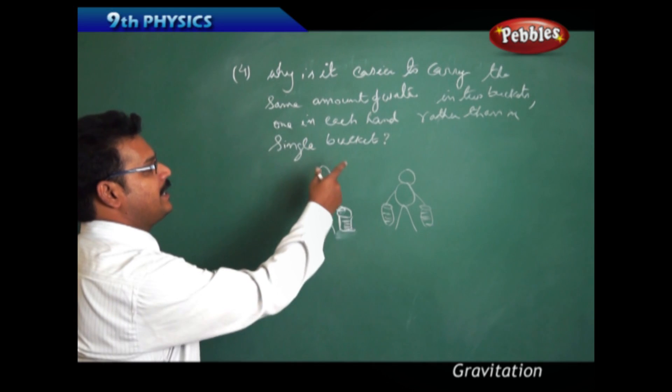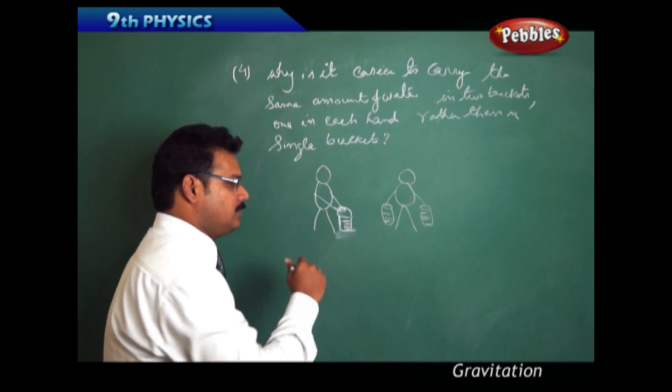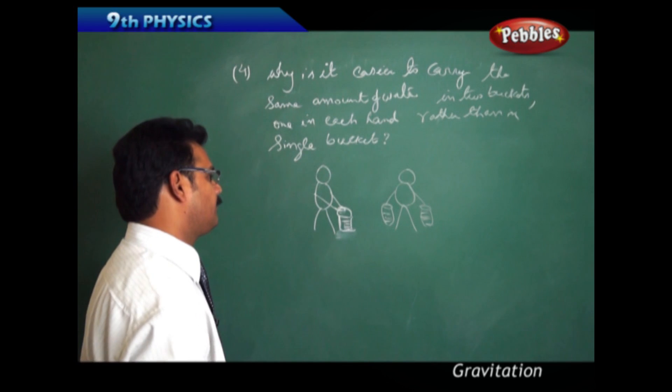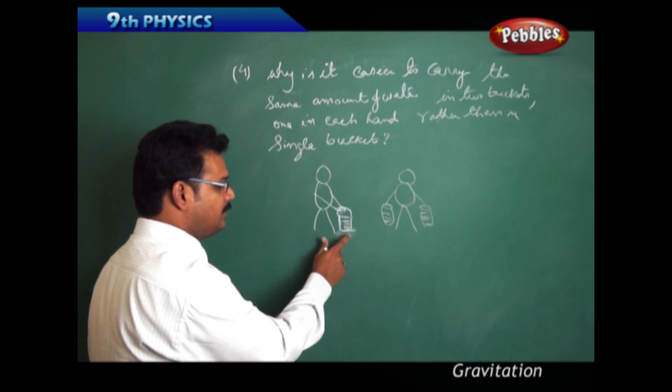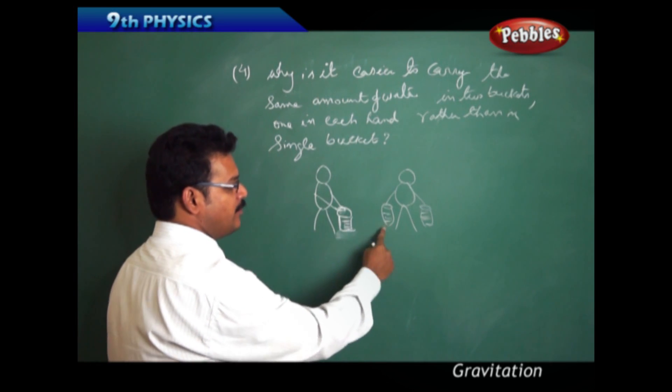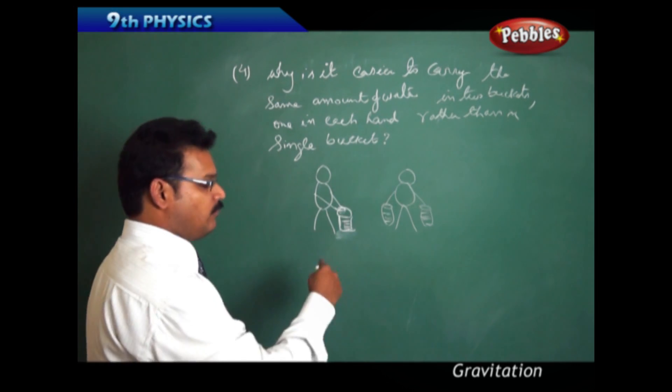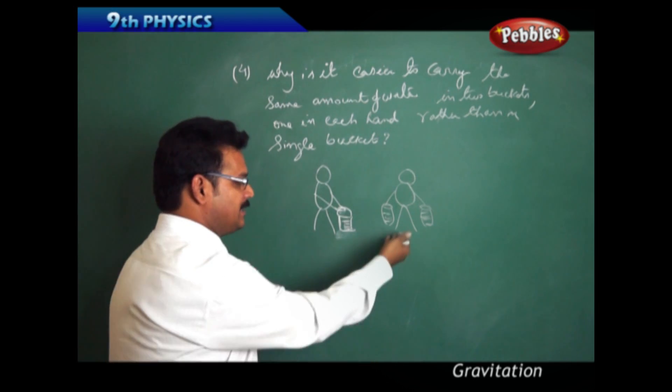Next question: why is it easier to carry the same amount of water in two buckets, one in each hand, rather than in a single bucket? See the two diagrams drawn here. Here the person is holding a single bucket. The same amount of water is distributed in two equal buckets and carrying in two hands. In general experience, this is easier.